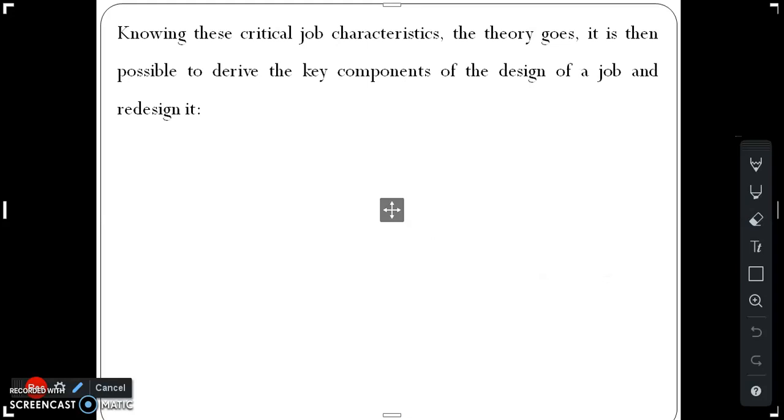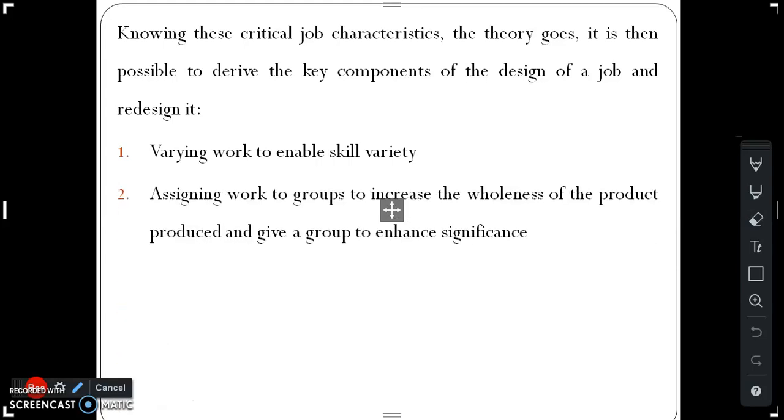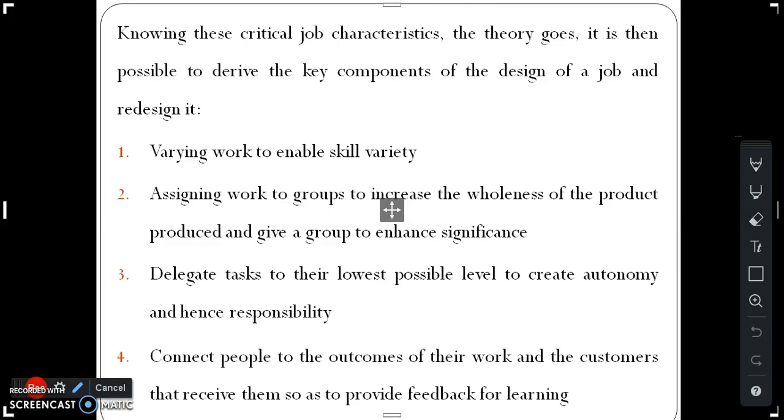Knowing these critical job characteristics, the theory goes, it is then possible to derive the key components of the design of a job. Varying work to enable skill variety. Assigning work to groups to increase the wholeness of the product produced and give a group enhanced significance. Delegate tasks to their lowest possible level to create autonomy and hence responsibility. Connect people to the outcomes of their work.